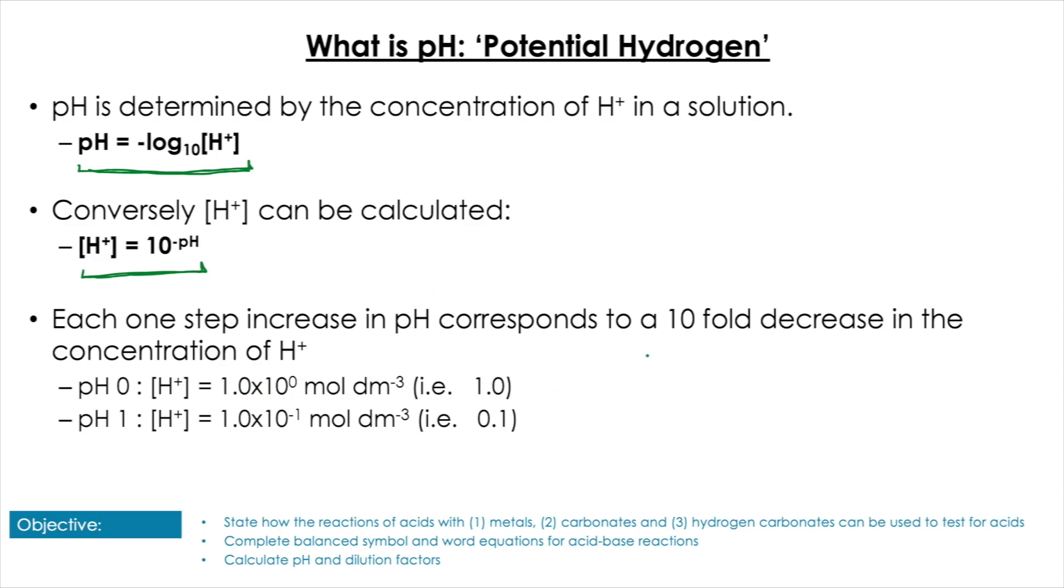So for each one step on a logarithmic scale, and therefore in the pH, we see a 10-fold decrease in the concentration of H+. From pH 0 to pH 1, and if we look at pH 2, we're going to get 1×10^-2, i.e., 0.01 moles per decimeter. So as we increase the pH, hopefully you may already notice that we're going to continue that trend. So for pH 3, we would have 0.001 moles per decimeter, and so on and so forth.